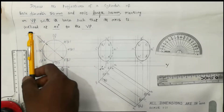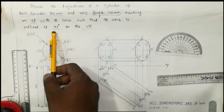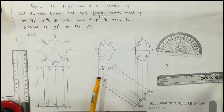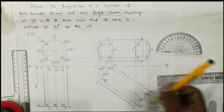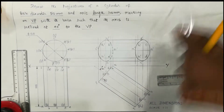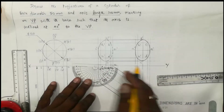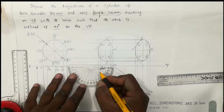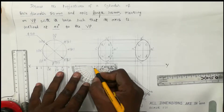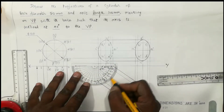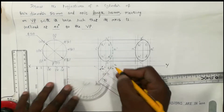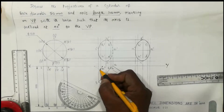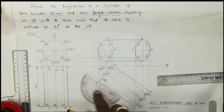Since the axis is inclined at 40 degrees to the VP, and whenever the axis is inclined to VP the angle of inclination always comes below the XY line, take a point on the XY line and draw one inclined line at an angle of 40 degrees using your protractor. The point chosen must be in coincidence with the center point of the protractor.